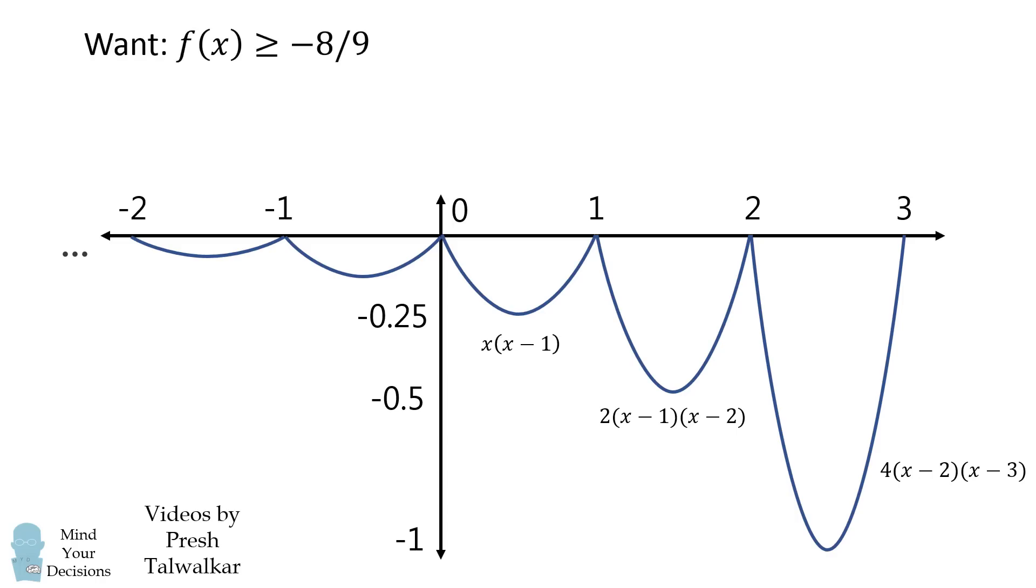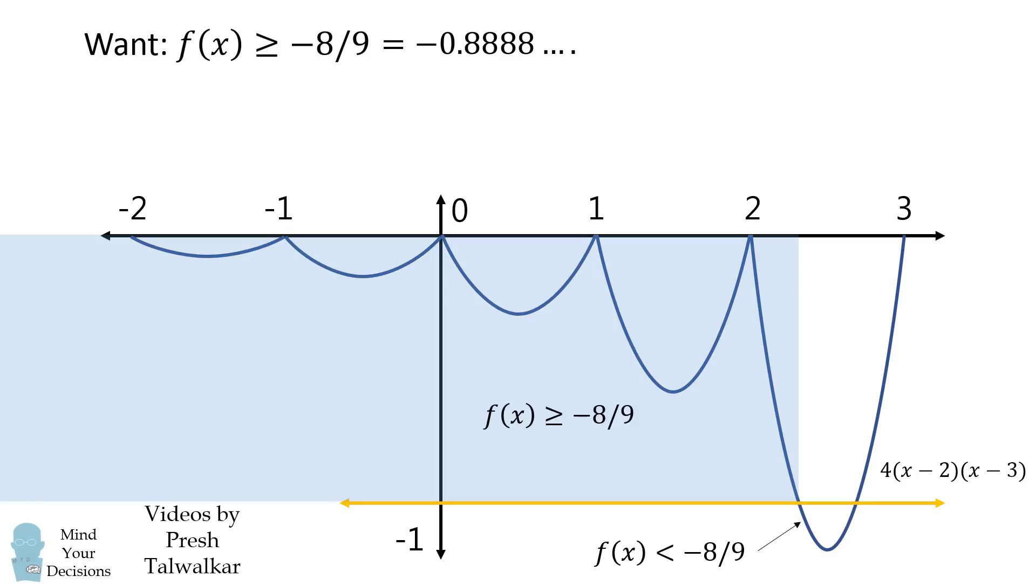So looking at this graph, we want f of x to be greater than or equal to negative 8 over 9. So let's put negative 8 over 9 as a line in this graph. Let's do y is equal to negative 8 over 9. Now you'll see in the third interval from 2 to 3, it's going to intersect. So at some point, f of x is going to be less than negative 8 over 9. And we want to look for the points where f of x is greater than or equal to negative 8 over 9. So we're looking for this value m in which f of x is always greater than or equal to negative 8 over 9.